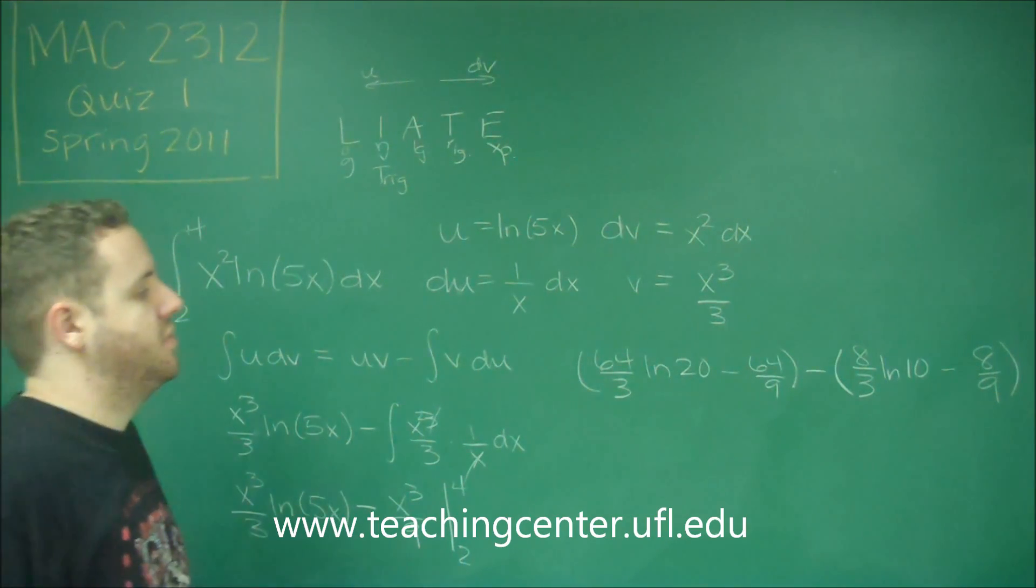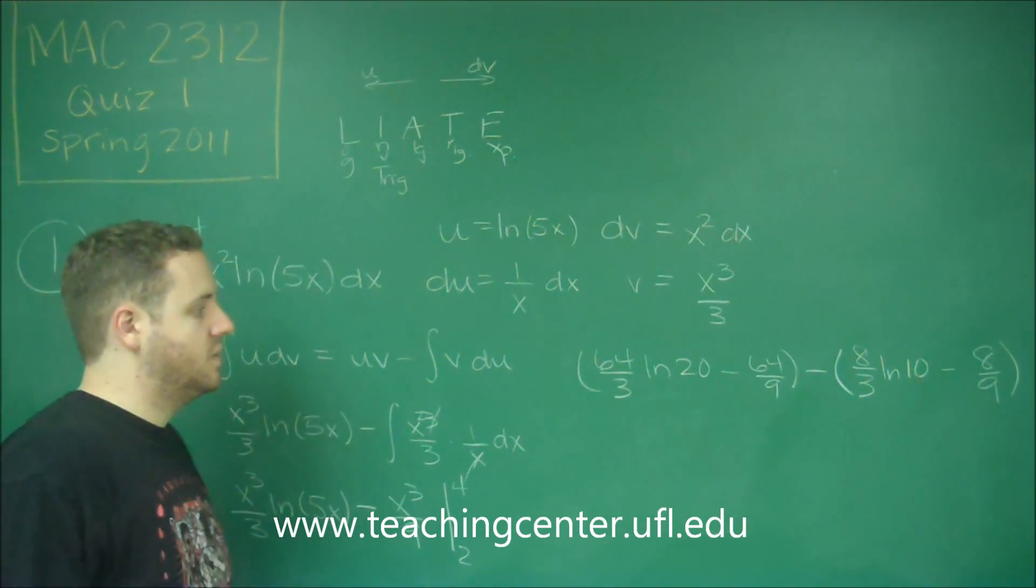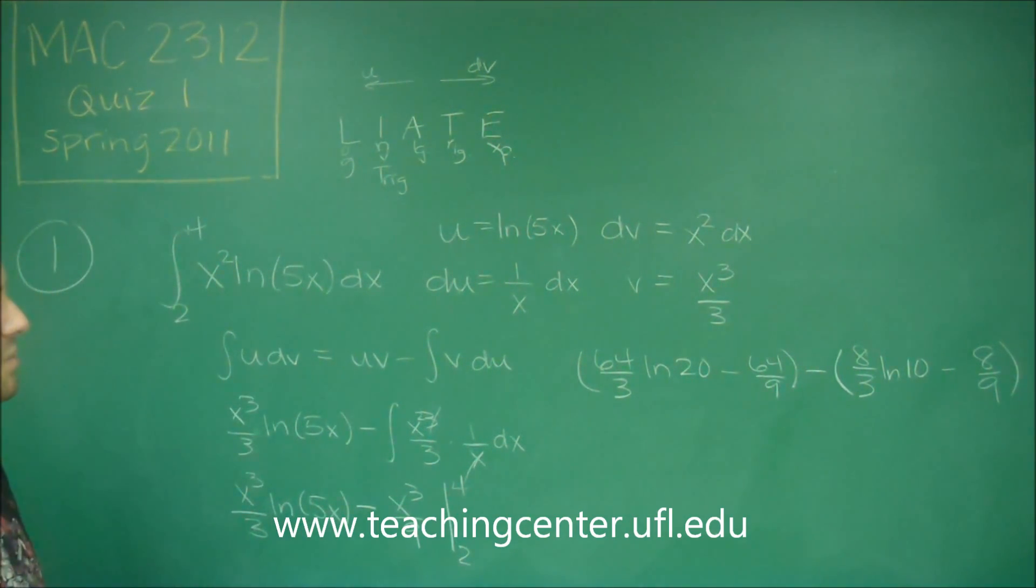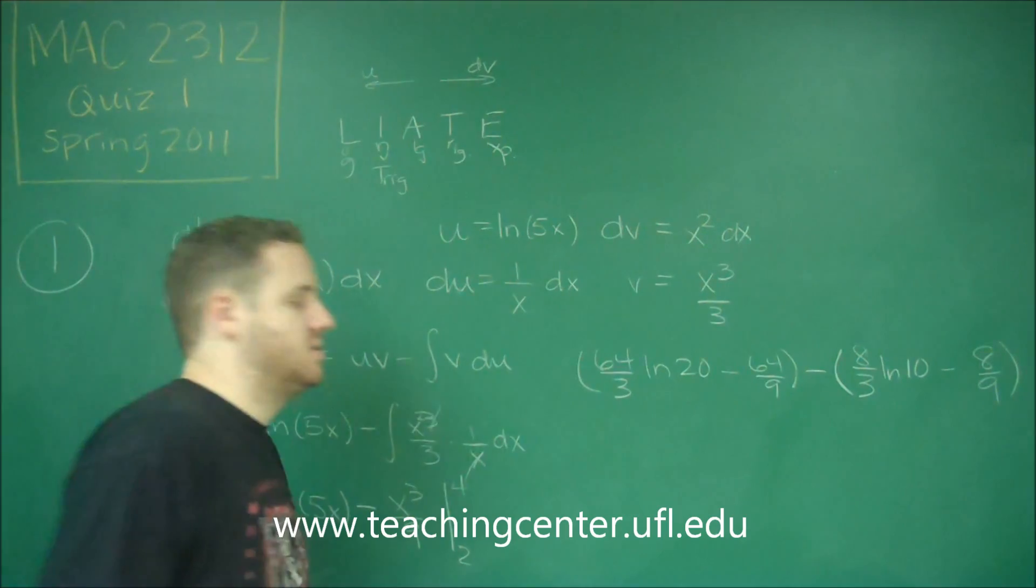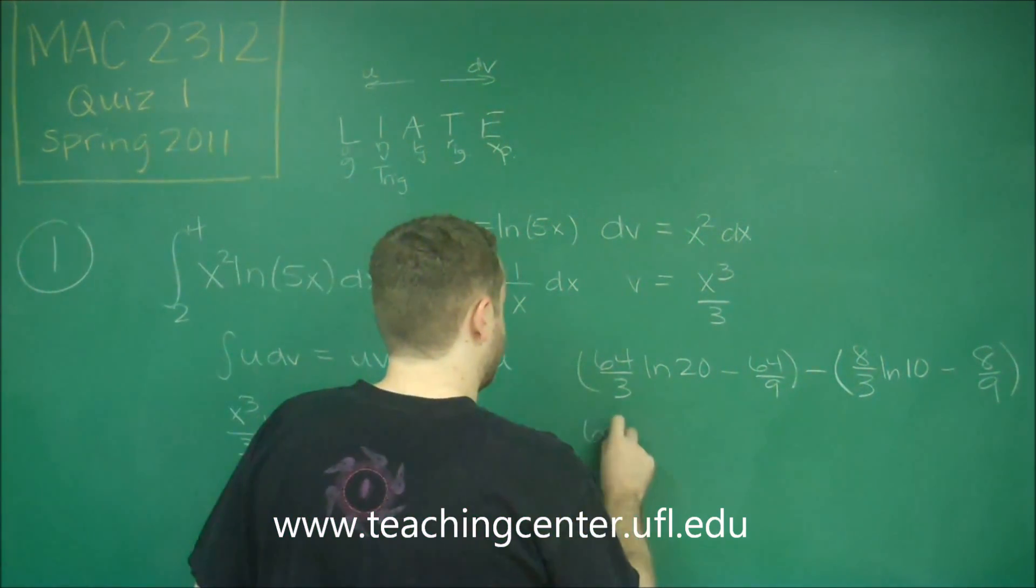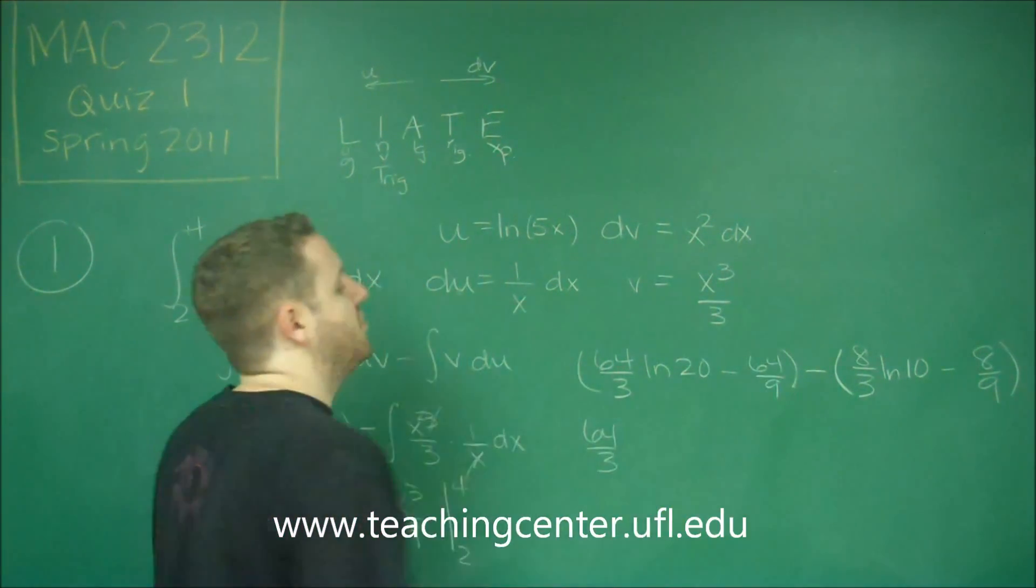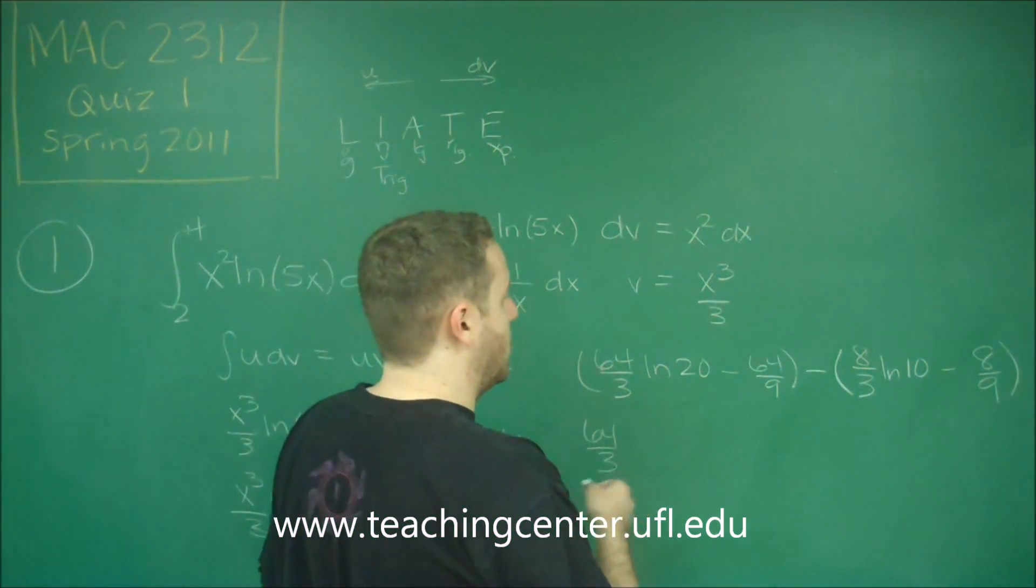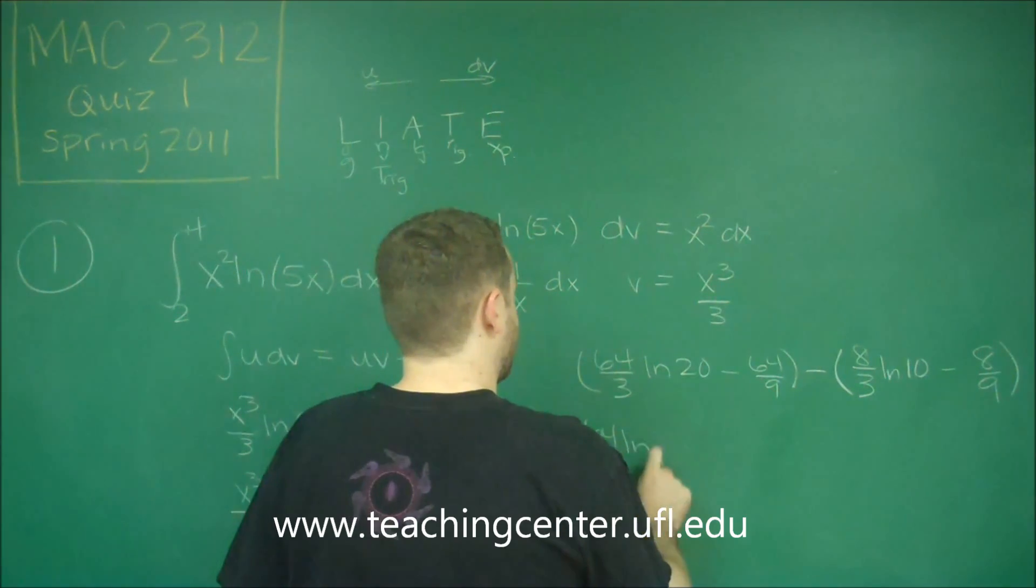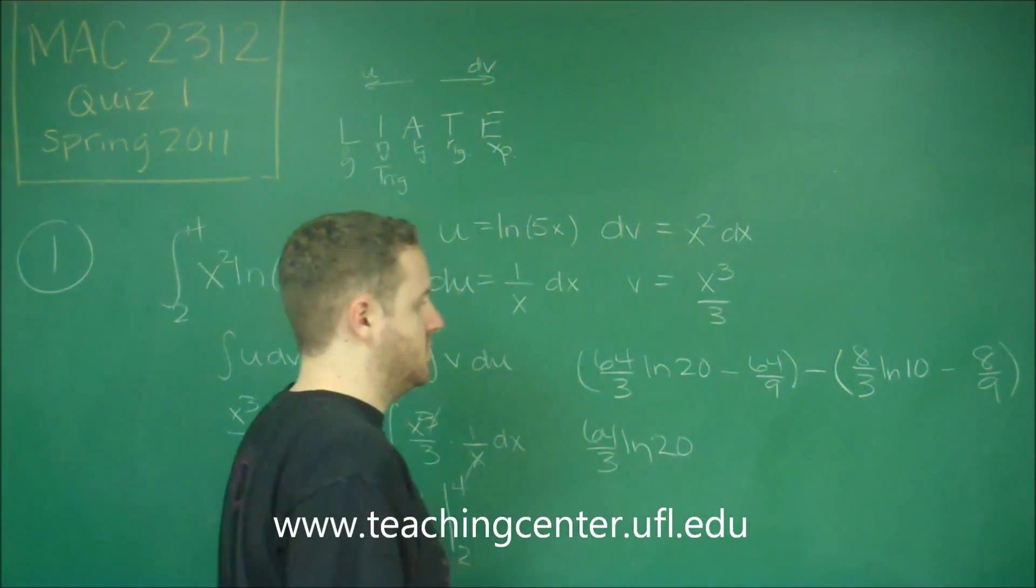Lastly, there's a couple different things that we can try to simplify a little bit here. Mainly just the over 9 parts you can combine. So let's just say this is 64 over 3. You can also simplify these ln's a little bit, but it's not going to really help you write it any more concisely. So 64 over 3, ln 20, minus 8 over 3, ln 10.